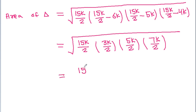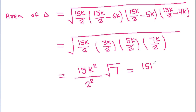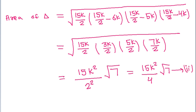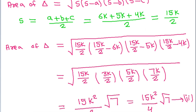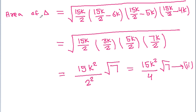We have 15 and 3 into 5 is also 15, so 15 will come outside. The square root of k to the power 4 gives k squared, 2 to the power 4 under root gives 2 squared, and inside the root we still have 7. So here we get 15k squared divided by 4 times the square root of 7. Let's call this equation 2.